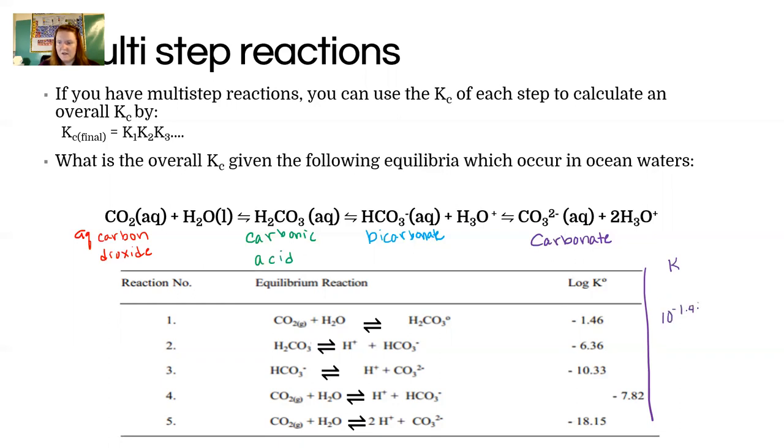You can find the value of K simply by going like 10 to the negative 1.46, so that's the K of the CO2 gas dissolving to form carbonic acid directly. And then of course carbonic acid forms bicarbonate, so you could find a K for that. You could figure out is it more products or reactants based on the value of K.